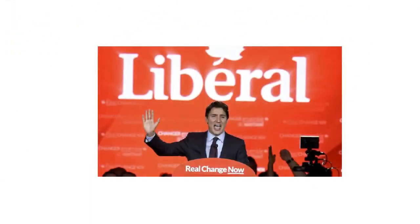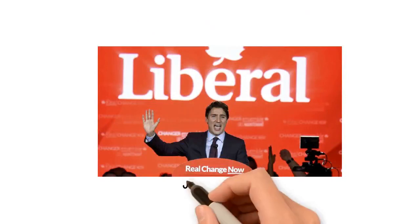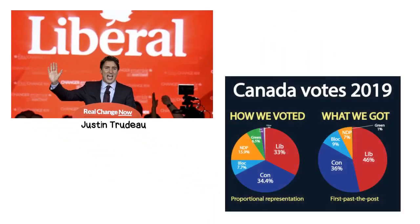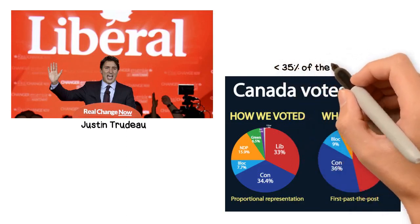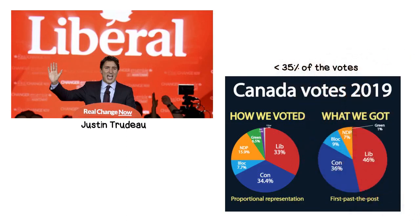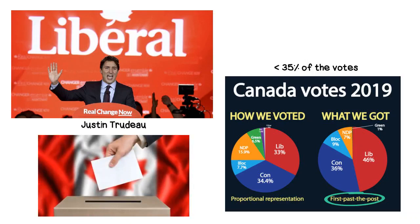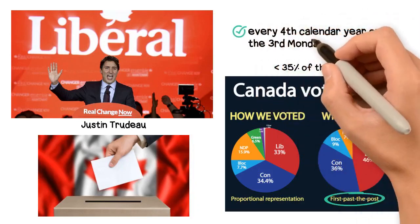The Liberal Party of Canada, led by incumbent Prime Minister Justin Trudeau, technically lost the popular vote to the Conservatives, which only marks the second time in history that a governing party formed a government whilst receiving less than 35% of the vote. This is referred to as first-past-the-post. In Canada, all Canadian citizens aged 18 and above, as of the polling day, have the right to vote. Federal elections since 2009 have been legislated to occur every fourth calendar year on the third Monday in October.